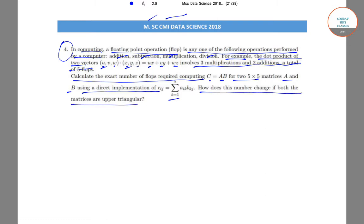If we have two matrices A and B which are upper triangular — upper triangular basically means above the diagonal is non-zero, and below the diagonal all the numbers will be zero — so in both A and B, below the primary diagonal every element is zero.